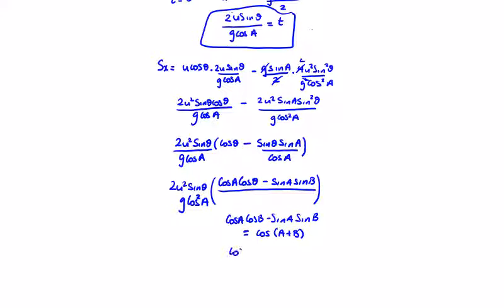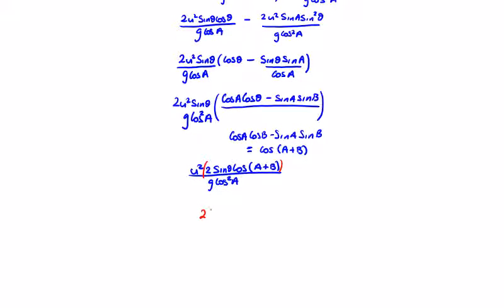That gives us cos of alpha plus theta on top. We also have 2u squared sin theta, so writing it as u squared times 2 sin theta cos of something, with g cos squared alpha on the bottom. Using the trig identity: 2 sin A cos B equals sin of A plus B plus sin of A minus B.